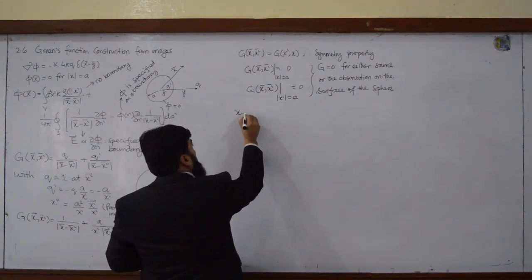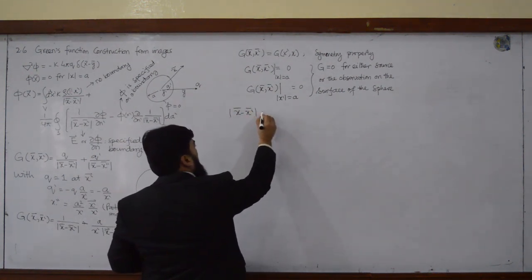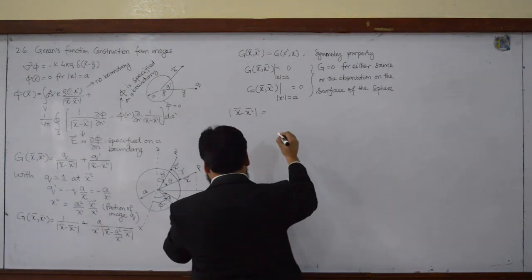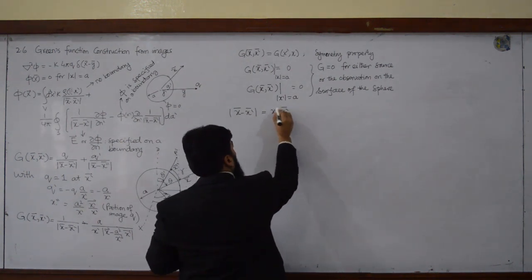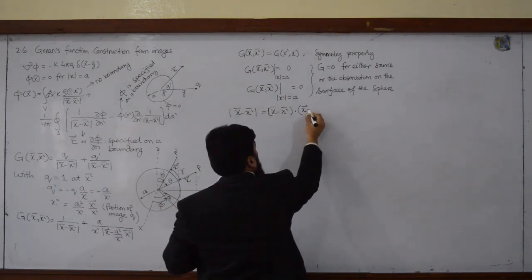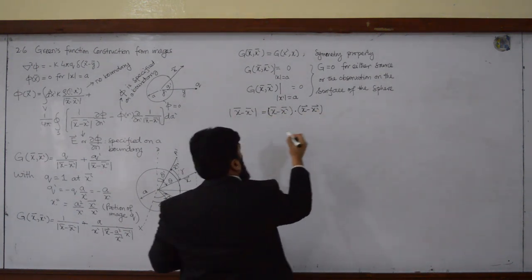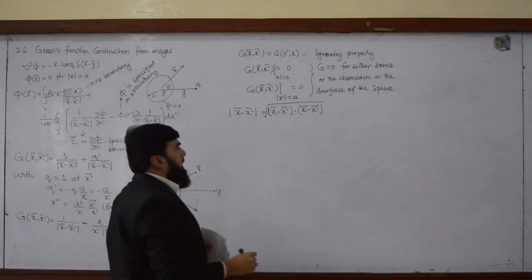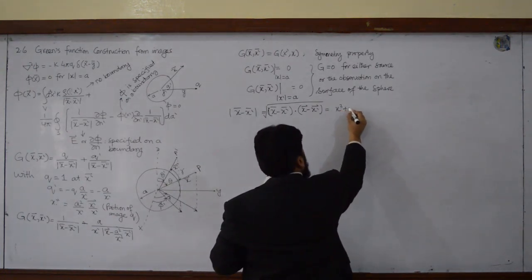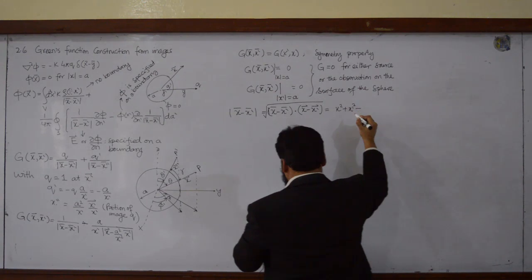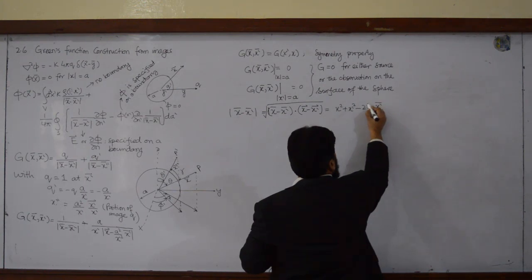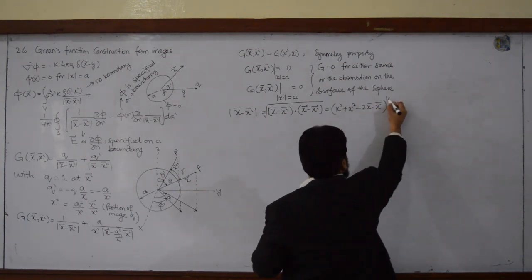What is |x minus x prime|? If I want to calculate this, it will be equal to: x minus x prime as a dot product with x minus x prime, square-rooted. So I can write this as the square root of x squared plus x prime squared minus 2 x dot x prime.